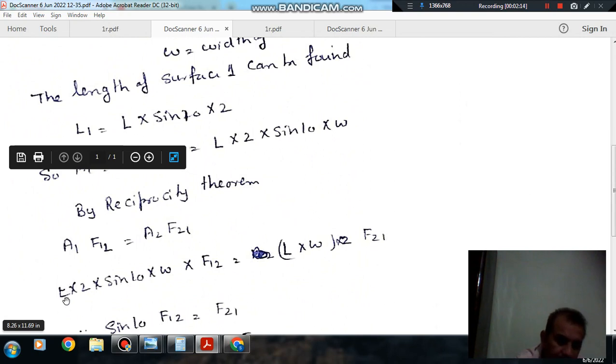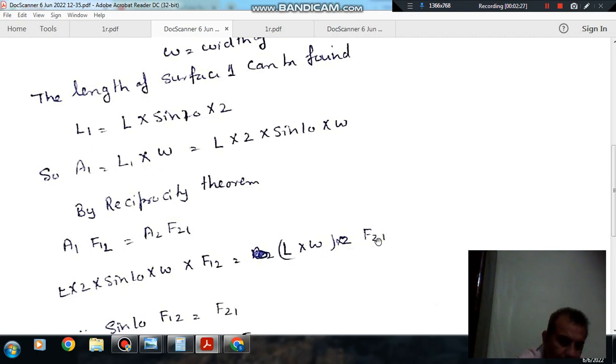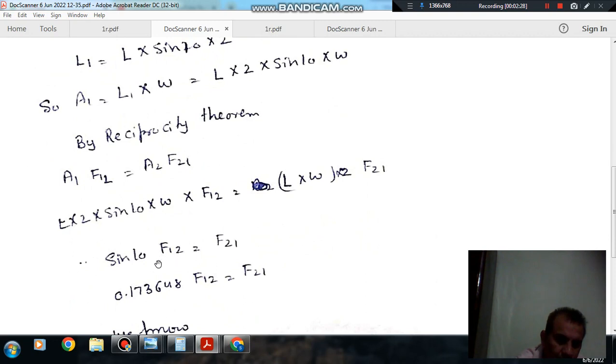A1 is L times 2 times sin 10 times W times F12, and A2 is L times W times 2 times F21. So F12 times sin 10 equals F21, and this will be 0.173648 F12 equals F21.